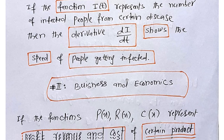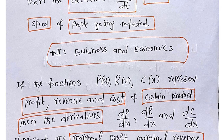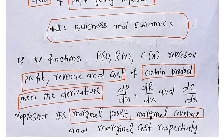Similarly, in business and economics, if the functions P(x), R(x), and C(x) represent profit, revenue, and cost of a certain product, then their derivatives are denoted by dP/dx, dR/dx, and dC/dx respectively.